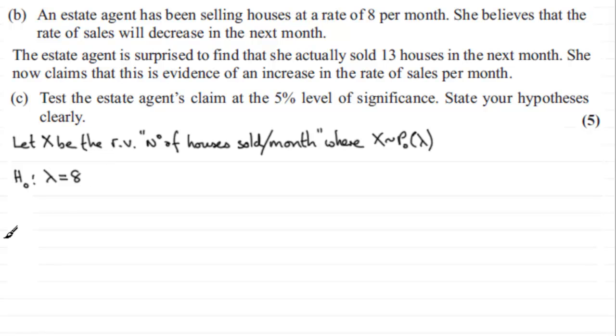Then we have the alternative hypothesis H1, which is that because the number of houses sold is now 13, there's a possibility that the mean rate has increased - it's greater than 8, and that's what we'll be testing. We have an observed value for this test: 13 houses sold, so the observed value x equals 13. I'm testing this at the 5% level of significance, so alpha is 5%.